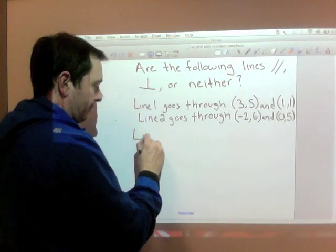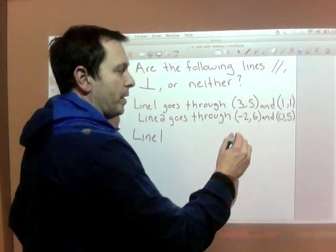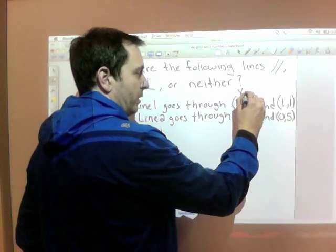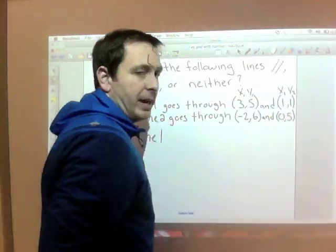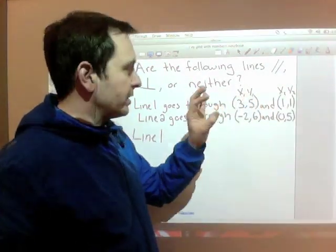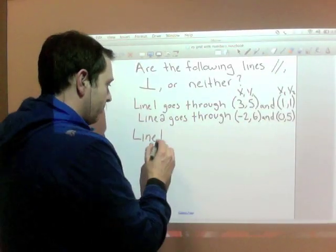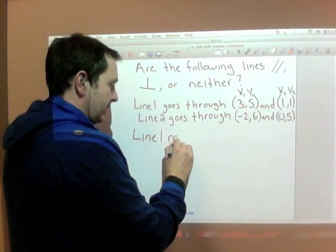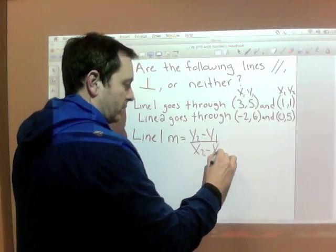Let's look at line one. Line one goes through point three, five and one, one. I'm going to call this x one, y one, x two, y two. And again, it doesn't matter if I called this x one, y one and this x two, y two, as long as the ones stay together and the twos stay together. So my slope formula is m equals y two minus y one over x two minus x one.